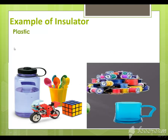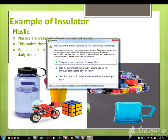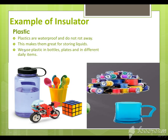An example of an insulator is plastic material. Plastic does not allow heat or electricity to pass through it, so it is known as an insulator. Plastic is waterproof and does not rot away, which makes it great for storing liquids. We use plastic in bottles, plates, and different daily items.